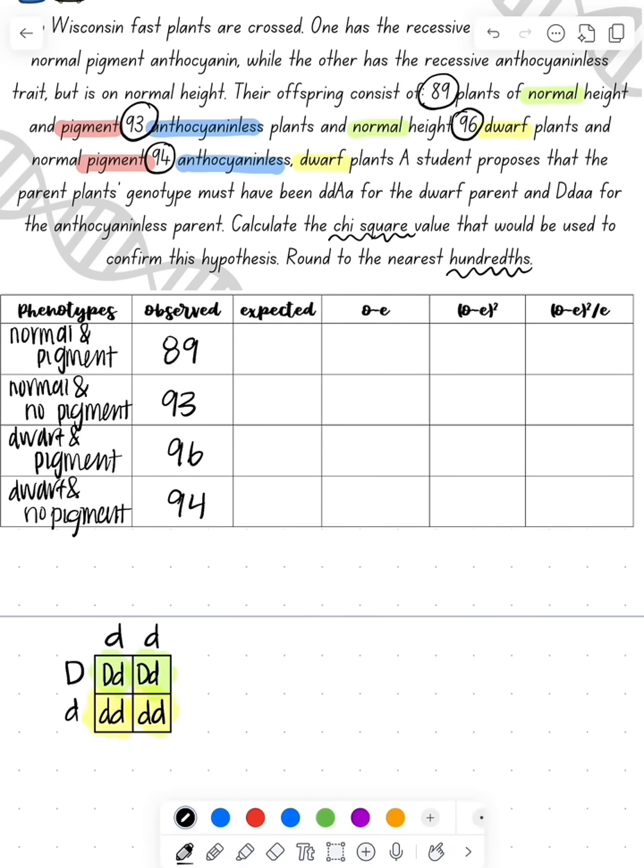And then we're going to do the Punnett square for the pigmented versus the non-pigmented. So we think that one of them is heterozygous, the other one's homozygous recessive. So when we do that cross, we find that one half of them are pigmented and one half of them are non-pigmented.